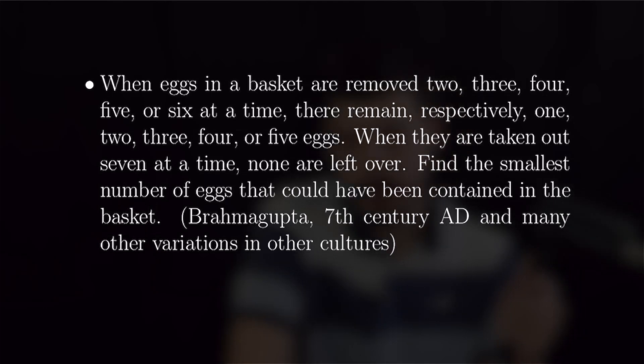These next two problems are going to be word problems, which are just simply systems of congruences that you can solve using the method I've already gone over. I'm not actually going to do them all the way out, but I will set them up for you. We have when eggs in a basket are removed two, three, four, five, or six at a time, there remain respectively one, two, three, four, or five eggs. When they are taken out seven at a time, none are left over.